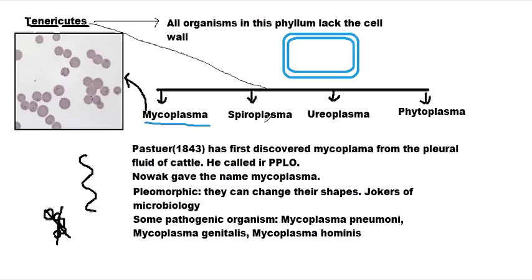Ureaplasma, as the name suggests, are urease-positive. Urease is an enzyme found in these organisms that breaks down urea into ammonia and carbon dioxide. They are found in places where there is urea, such as in urine. That is why they are called Ureaplasma.